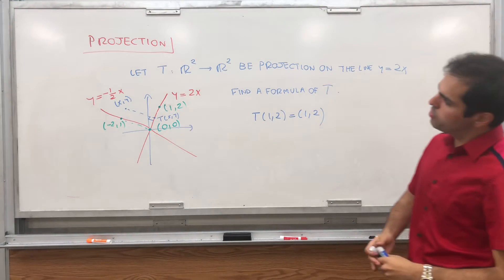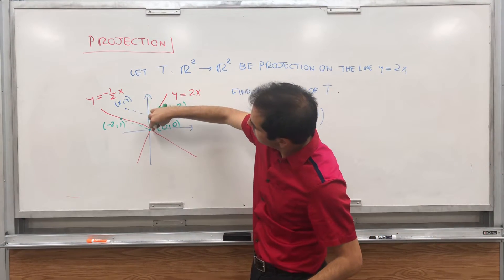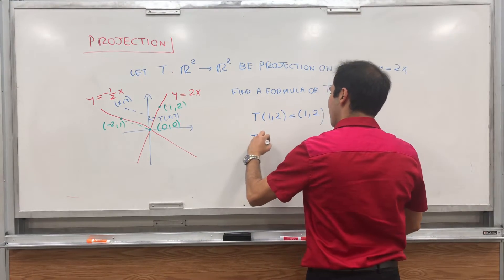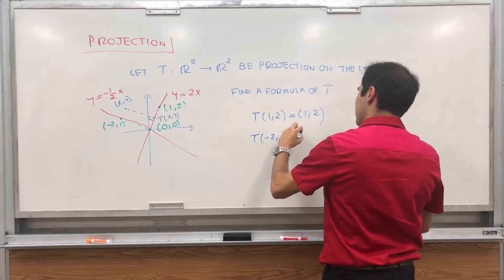then you should actually just get the origin. Because to make it perpendicular means to squish this point here, but this is precisely the origin. So T of minus 2 comma 1 is 0, 0.